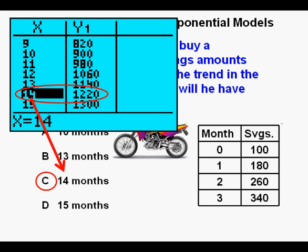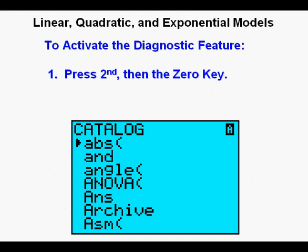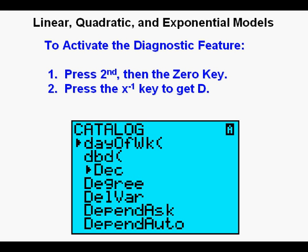One thing that you may have noticed is the R2 and R values after the regressions. Here's how to activate that feature. Press 2nd, then the 0 key at the bottom of the keypad to get the catalog menu. Get to the letter D by pressing the X to the negative 1 key on the left side of the keypad.